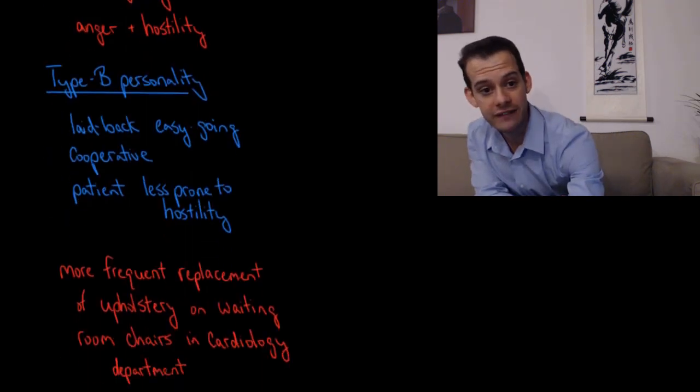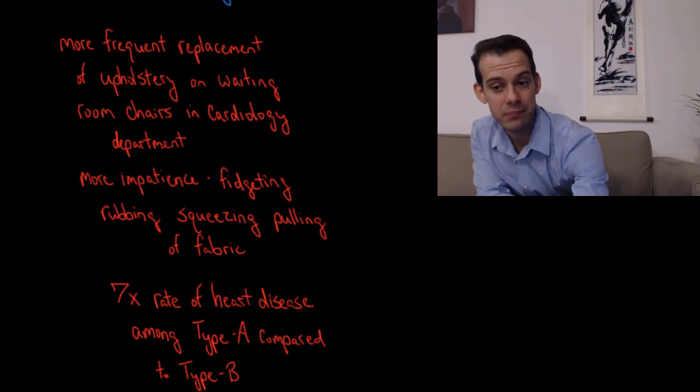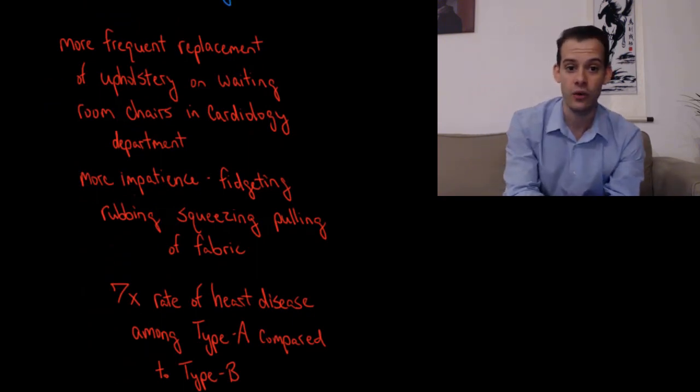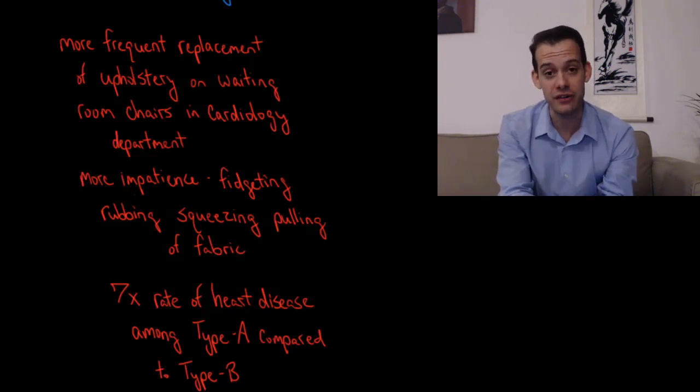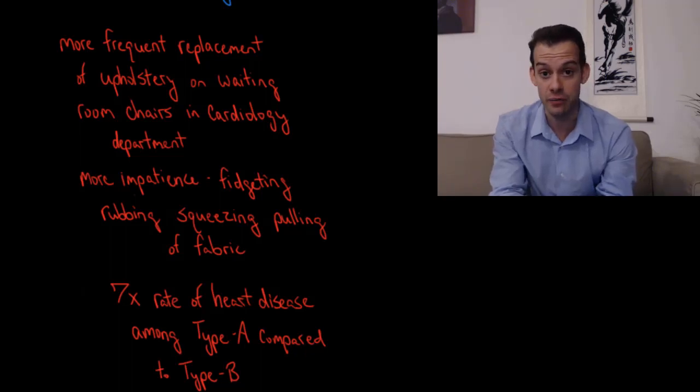Now one of the clues for this difference between type A and type B personality and heart disease was that in Friedman and Rosenman's waiting room the upholstery on the chairs needed to be replaced more frequently than the upholstery on chairs in other departments.